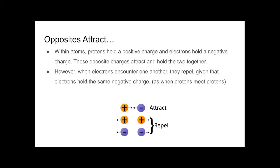Electrical charges can be observed at the atomic level. Within atoms, protons hold a positive charge and electrons hold a negative charge. These opposite charges attract and hold the two together. However, when electrons encounter one another, they repel, given that electrons hold the same negative charge, as when protons meet other protons.